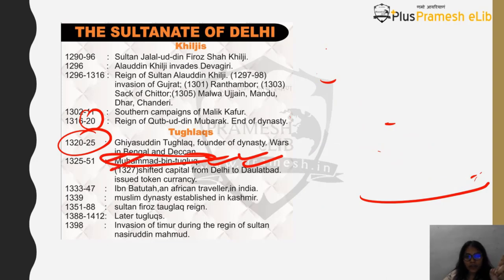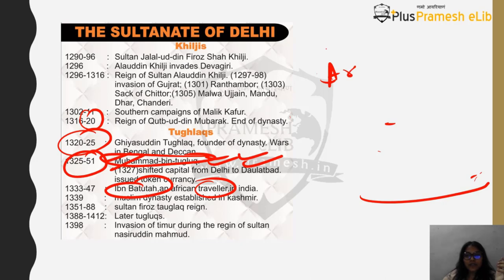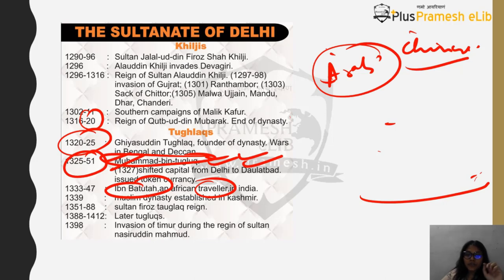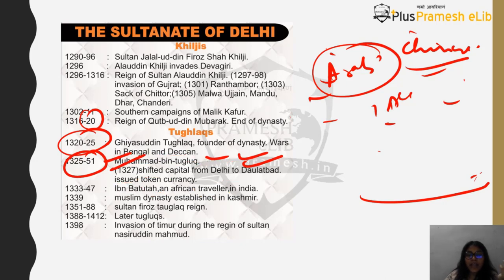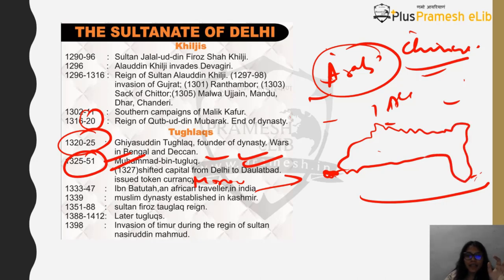Mohammed bin Tughlaq ruled for almost 25 years. There was a very famous traveler who came during his reign: Ibn Battuta, an African traveler from Morocco who traveled through Egypt, Tunisia, Turkey, Saudi Arabia, and then came to India. His accounts are very important for understanding what was happening in society and economy at that time. In UPSC Mains 2018 a question was also asked about Arab travelers, where you had to mention Ibn Battuta and Al-Biruni.